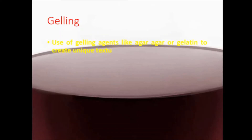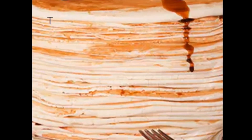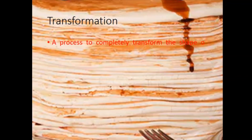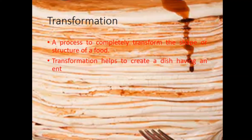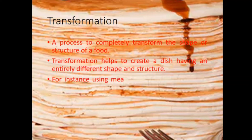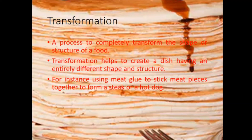Gelling is the use of gelling agents like agar agar or gelatin to create unique textures in food, forming a liquid or brittle gel. Transformation is a process to completely transform the shape or structure of a food, helping to create a dish with an entirely different shape and structure — for instance, using meat glue to stick meat pieces together to form a steak or a hot dog.